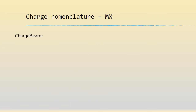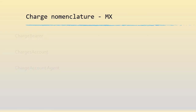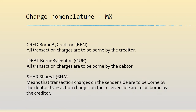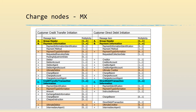In MX, similarly, we have three tags: charge bearer, charges account, and charge account agent. Agent is nothing but a bank in MX parlance. These map to OUR, BEN, and SHA but written in a different format: BEN is known as CRED, OUR is known as DEBT, and SHA as SHAR. We also have SLAV, which stands for service level agreement charges, but we won't cover that here. The charge bearer appears once, while charge account and charge account agent are repeated nodes, applicable to both credit transfer and direct debit.